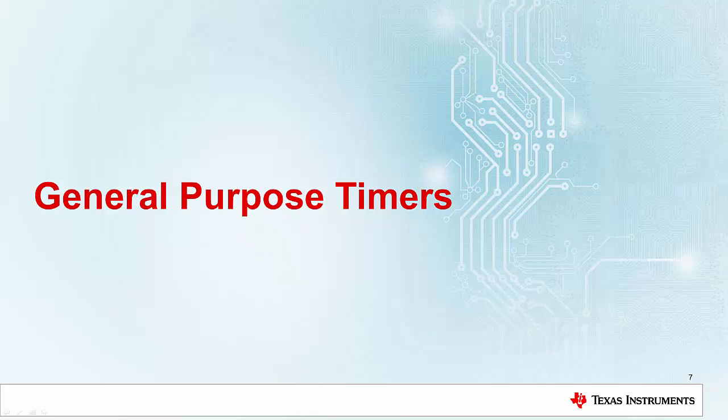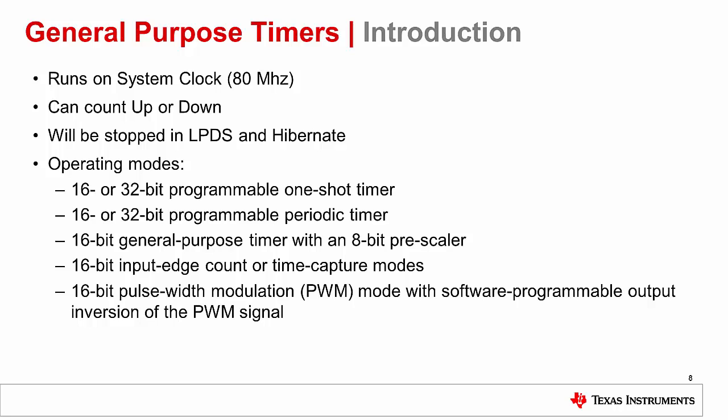In the next section, we will introduce the General Purpose Timers. The General Purpose Timers run off the system clock and can be used in the count up or down configuration. An important note is that these timers will be stopped during low-powered deep sleep and hibernate modes. In normal operation mode, these timers can be configured in a variety of ways, including one-shot, periodic, time capture, and pulse width modulation modes.